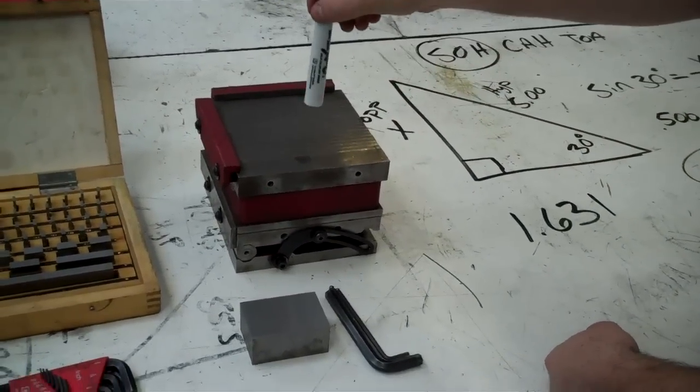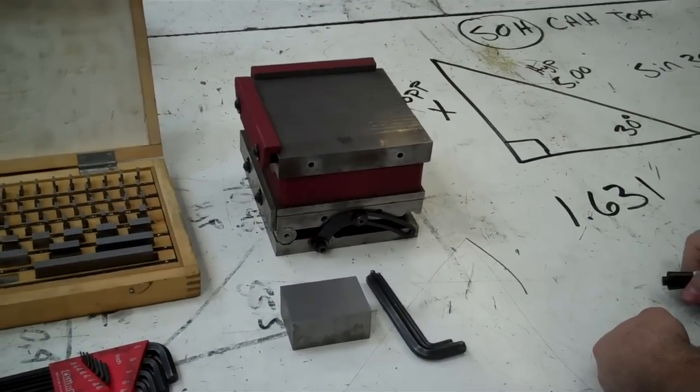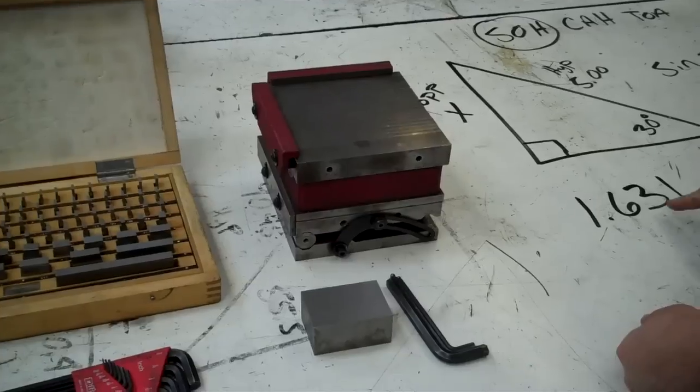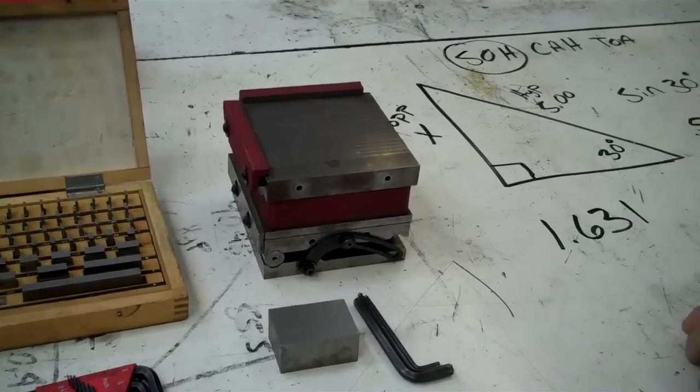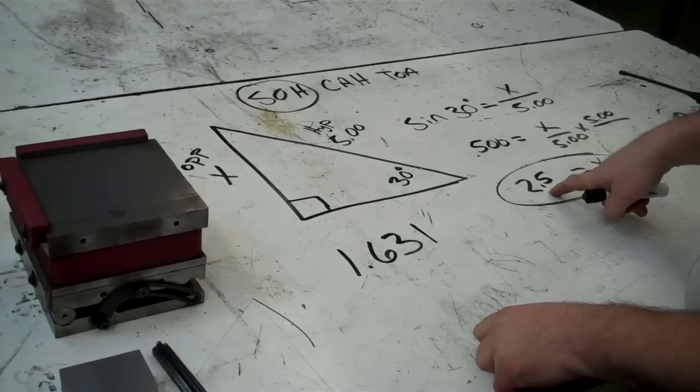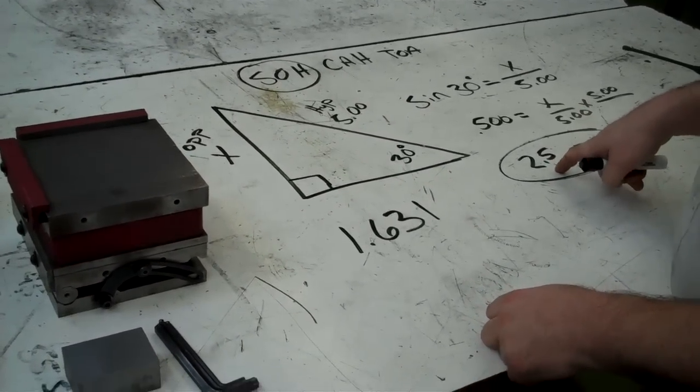The next step in order to set up our sine chuck here is to calculate out or to add up the gauge blocks. We figured out we needed 2 1/2 inches worth of gauge blocks. Now, that's a pretty easy number to come up with.